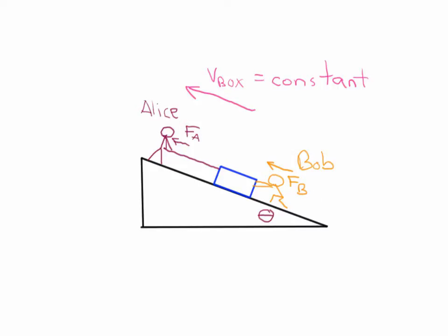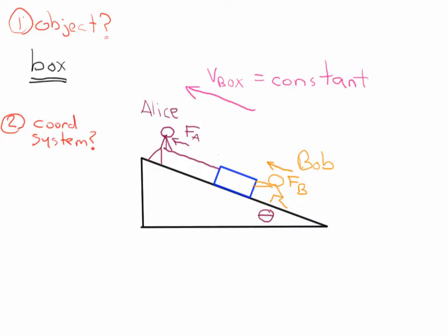One more twist to make this more interesting: the box is traveling up the hill at a constant velocity. So Alice and Bob are pushing the box up the hill, and the box is moving at a constant velocity. The first thing we need to do is decide which object we're calculating a free body diagram for. There are a lot to choose from — Alice, the rope, the box, Bob, and even the hill. The thing that's central to this problem is the box, so that's what we're going to do.